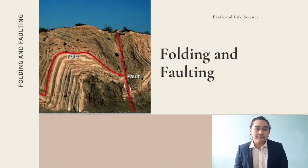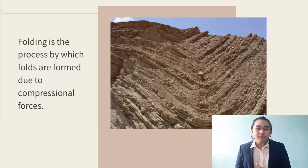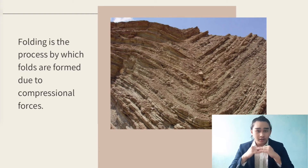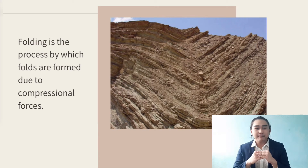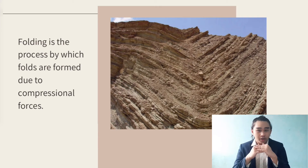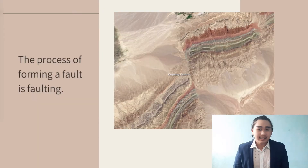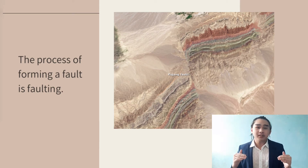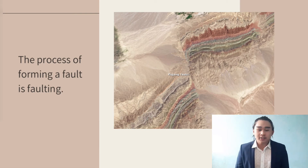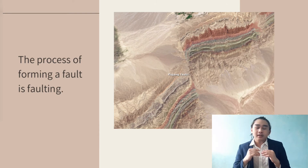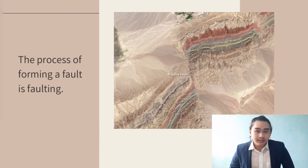Folding and Faulting. Folding is the process by which folds are formed due to compressional forces. This happens when two forces push towards each other from opposite sides. Faulting is the fracturing and displacement of rock strata along a fault plane, caused by either tension or compression. The process of forming a fault is called faulting.